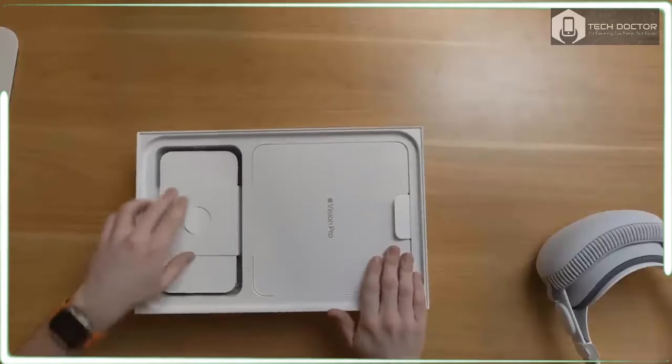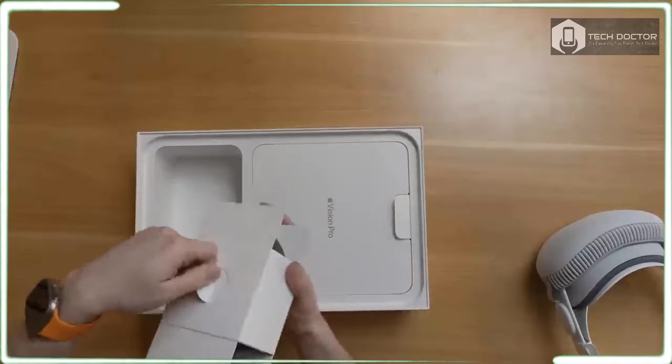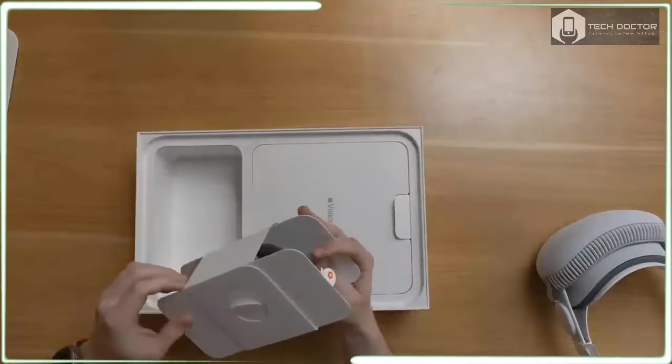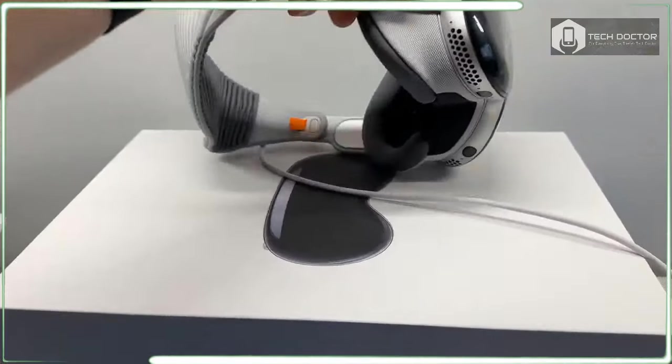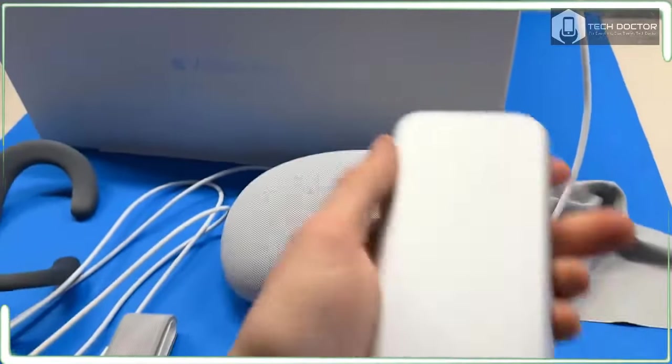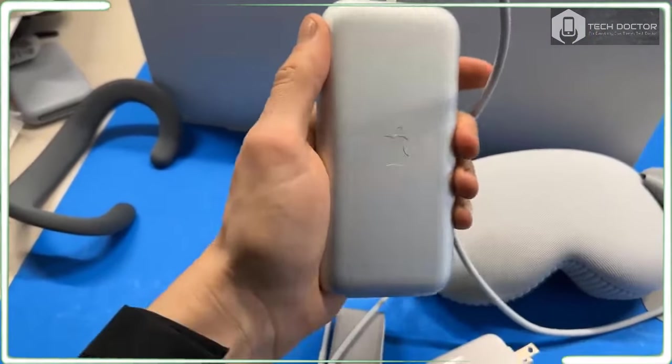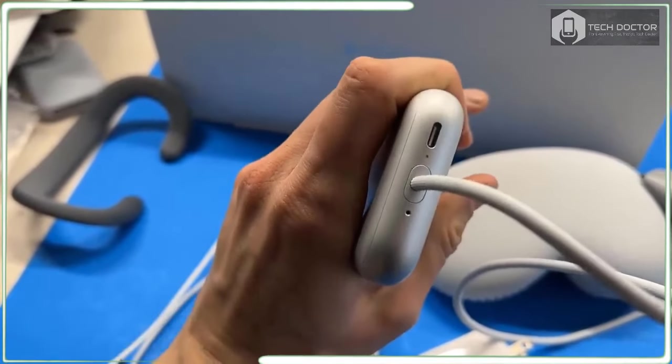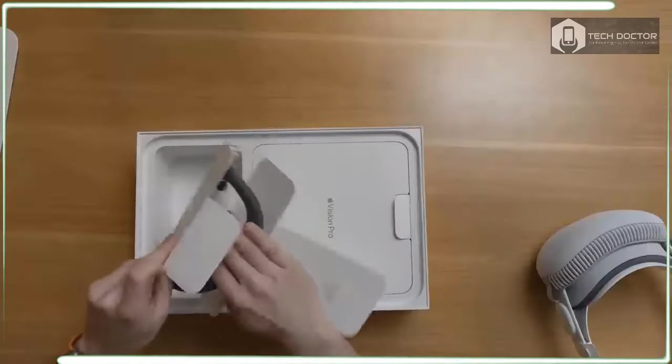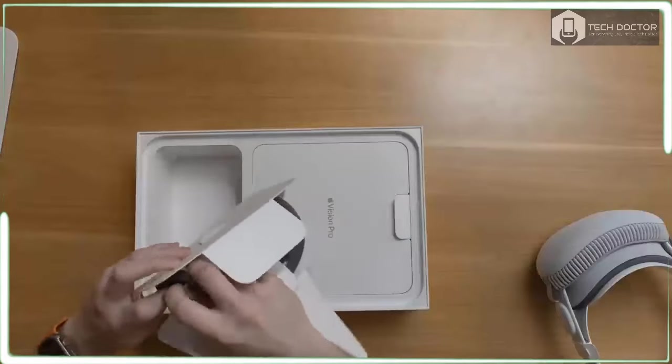While setting up the Vision Pro, I immediately got accustomed to that input because you're worked through a calibration process that involves following a dot around the screen and selecting it. Then you're greeted with a home screen of iOS-like icons that float in front of your view of the room you're in.